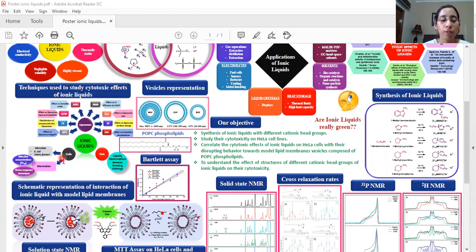Cell membranes are the first target of ionic liquids which are composed of the phospholipids and phospholipids that we are using in our work is the zwitterionic POPC phospholipid. These phospholipids in the aqueous medium form vesicular structure and this vesicle should mimic the cell membrane of the cell.